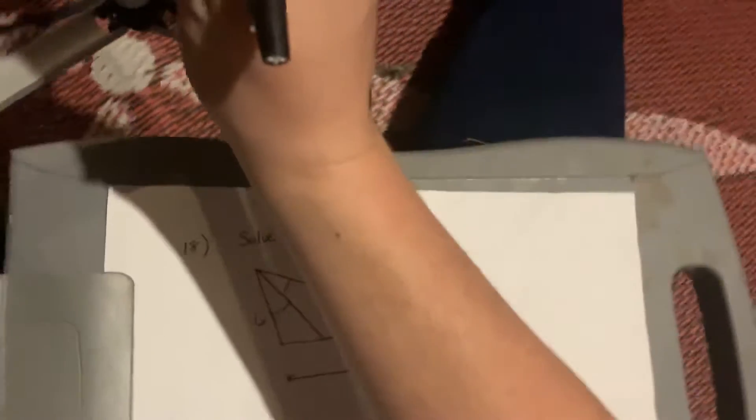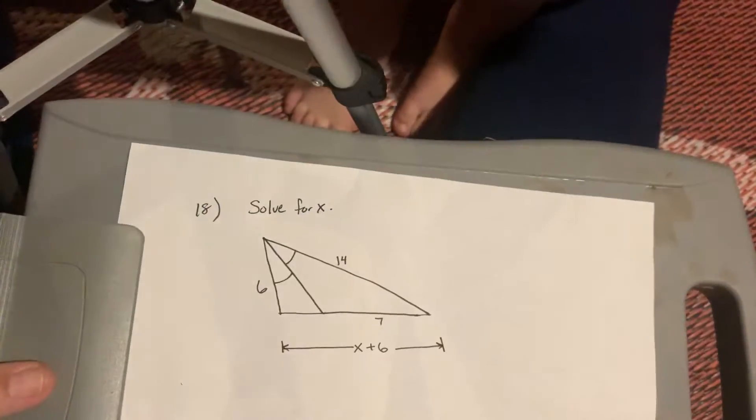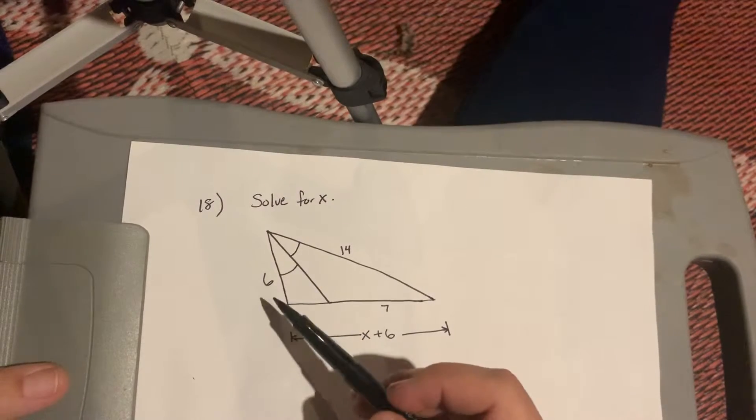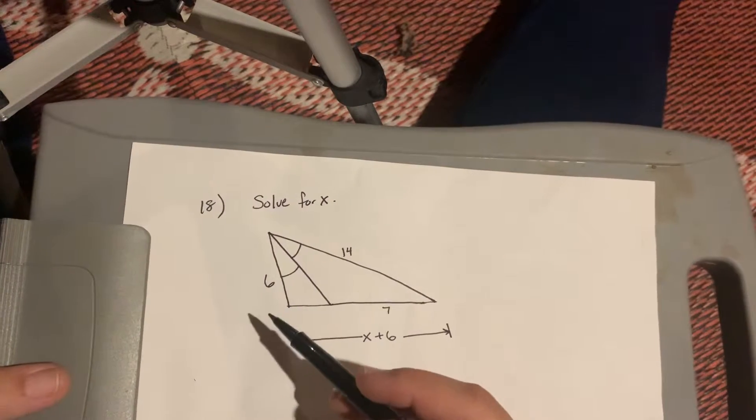So I'm looking here at this triangle that has two angles here that are equal. These two angles are both equal, which means this is an angle bisector theorem proportionality problem.